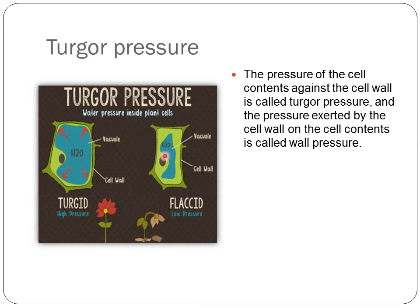We do not see this kind of pressure in a flaccid cell. In a flaccid cell, the contents have shrunken from inside and do not exert any pressure on the cell wall. Turgor pressure occurs only in the case of a turgid cell, when the cell contents push against the cell wall.